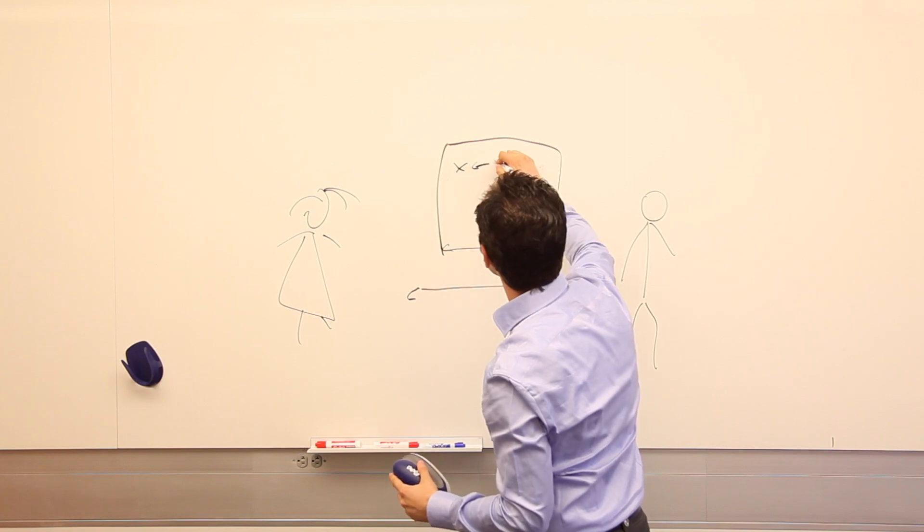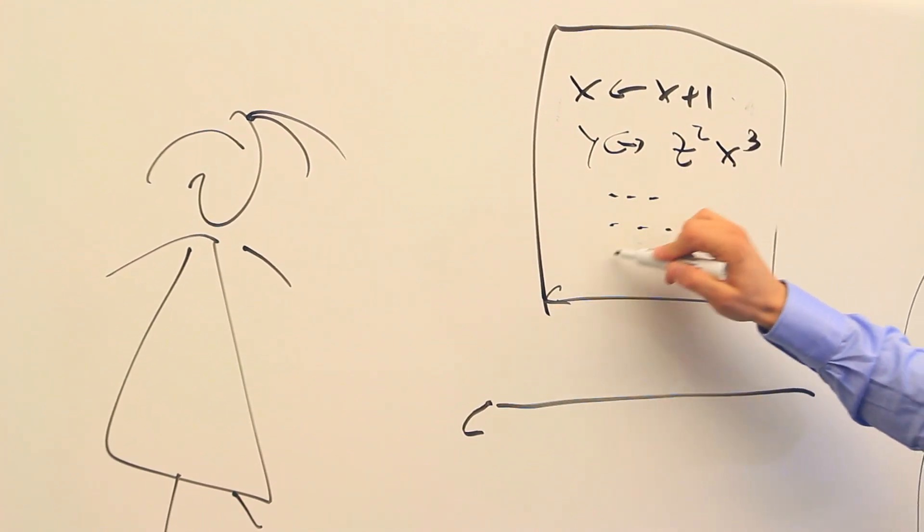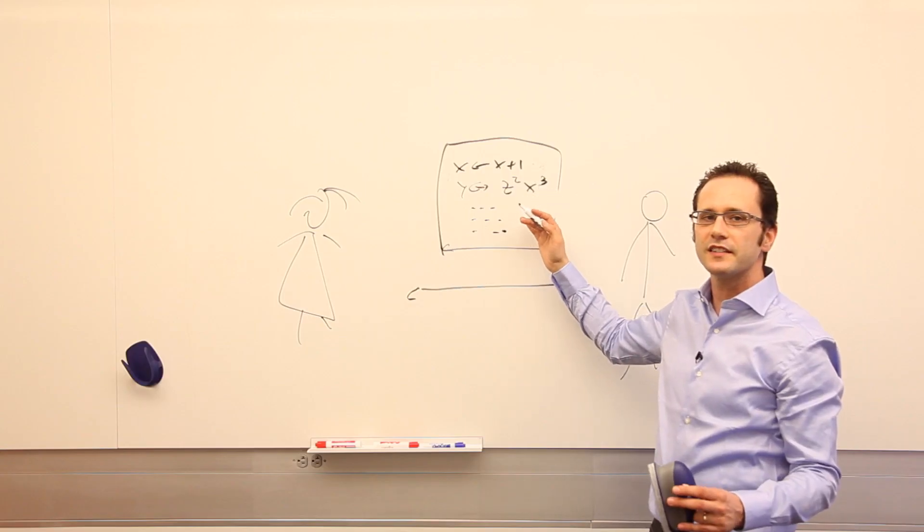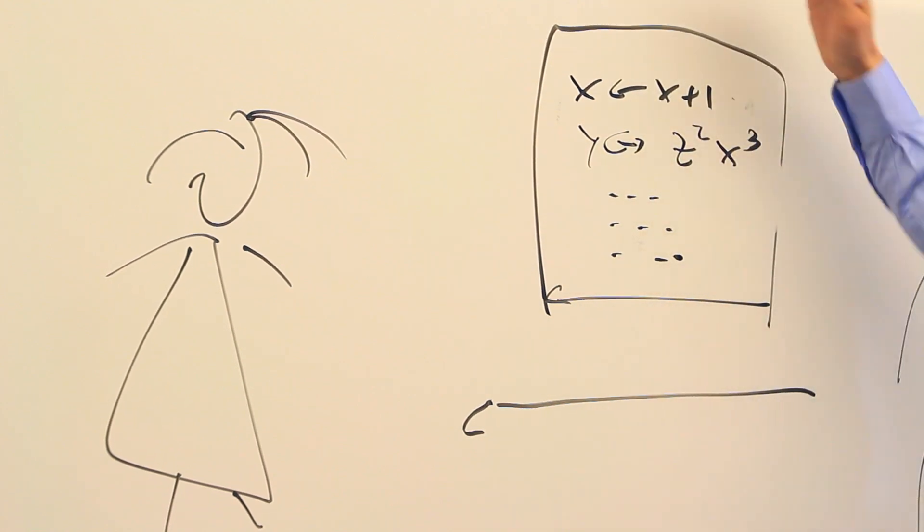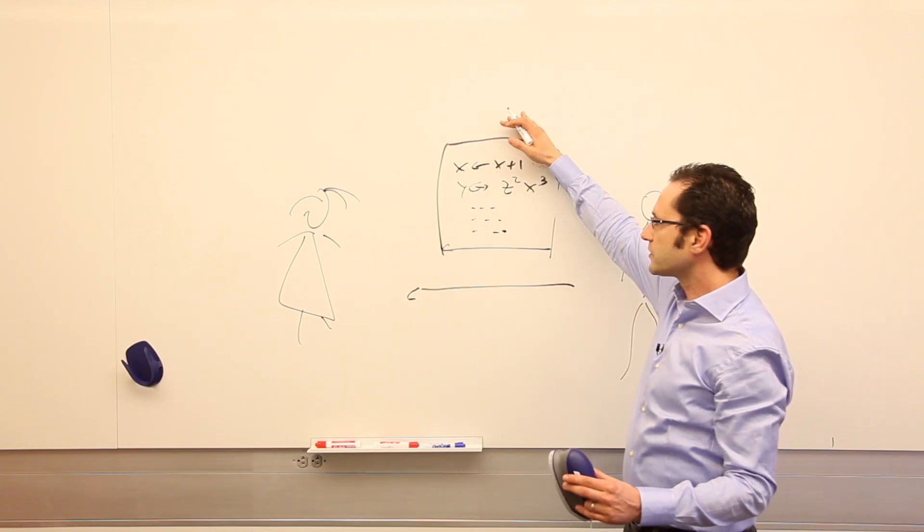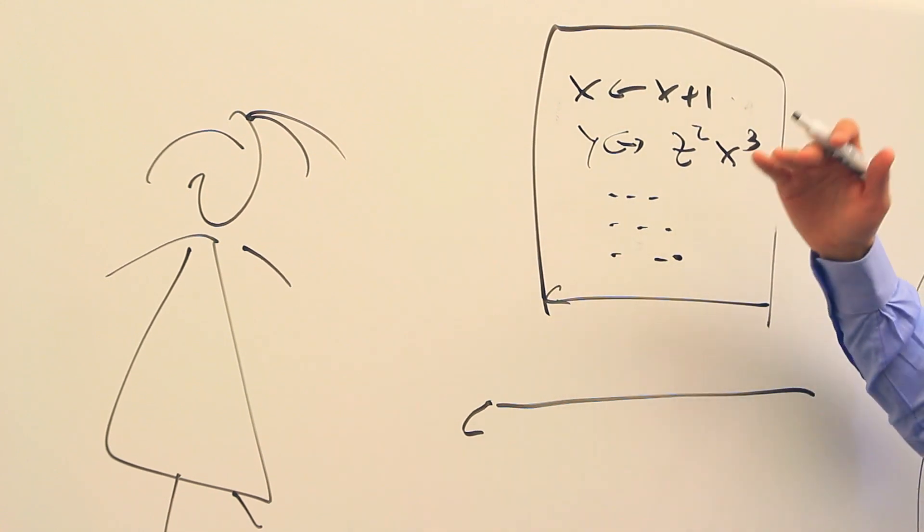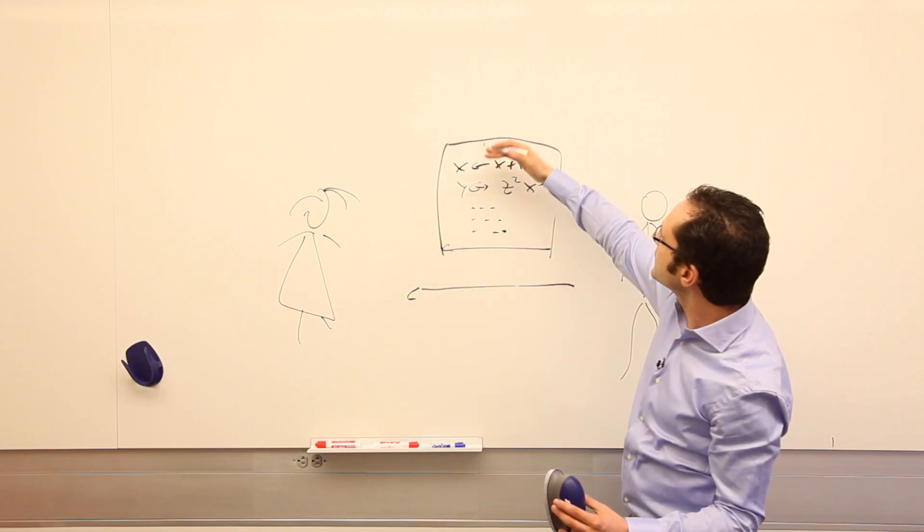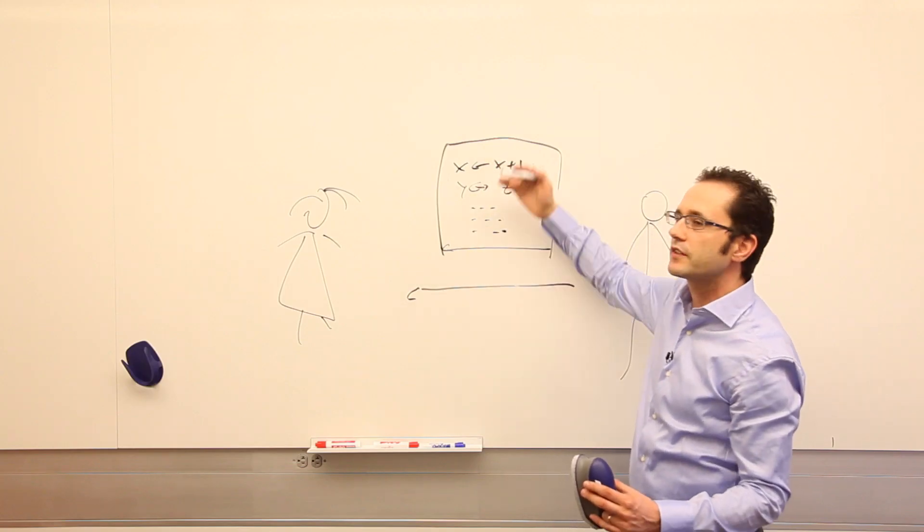Obfuscation allows us to change this thing to some different set of arithmetic operations that don't seem to make any sense. But if she runs these operations on the message, if the message is on this topic, she will get the decryption. If the message is not on this topic, she will get nothing. And by looking at this description, she will not be able to learn the secret key.